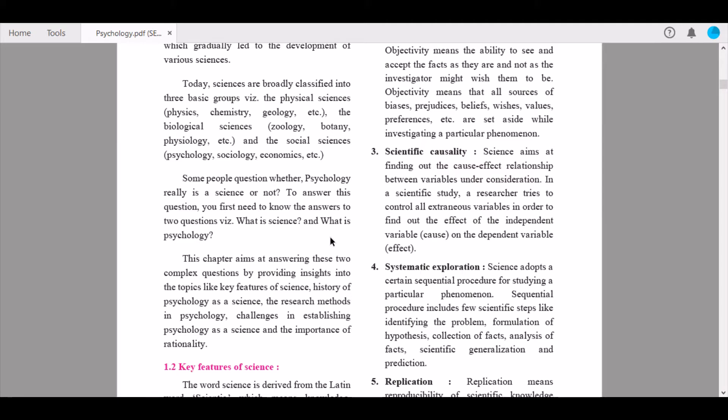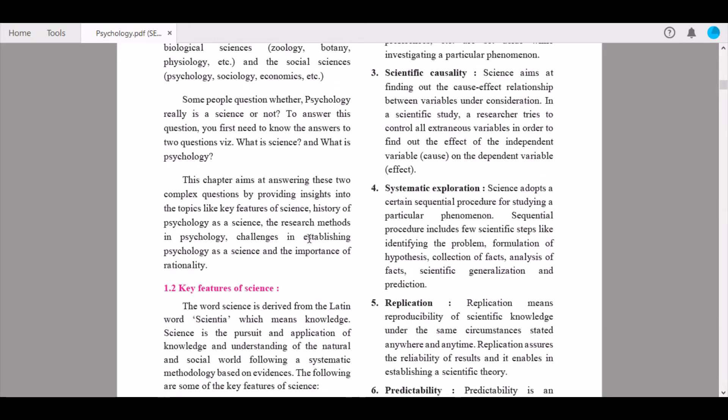This chapter aims at answering these two complex questions by providing insights into topics like key features of science, history of psychology as a science, and the research methodology used by various people in psychology.